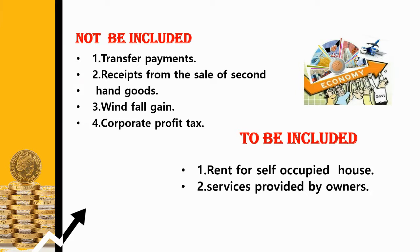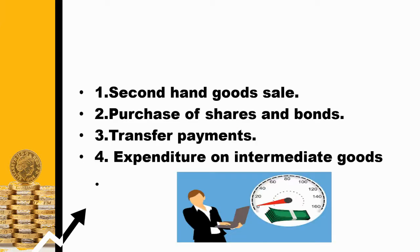The next method is the expenditure method. Under this method, national income is measured as a flow of expenditure — it is the sum total of private consumption expenditure, government consumption expenditure, gross capital formation, and net exports. The formula is: GNP = C (private consumption) + I (private investment) + G (government expenditure) + (X − M) (net exports). All these components are calculated under the expenditure method.